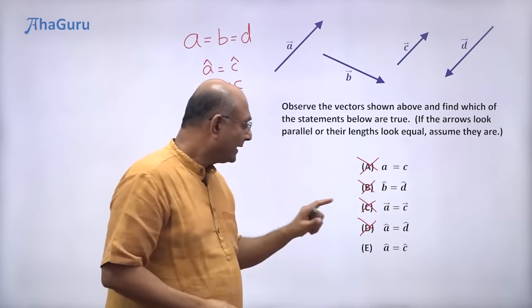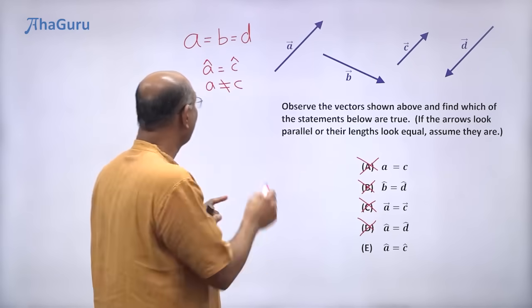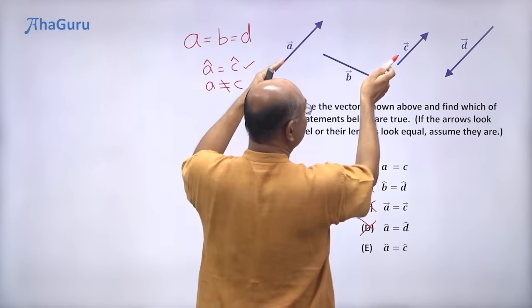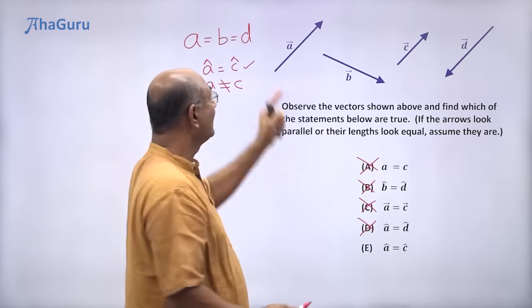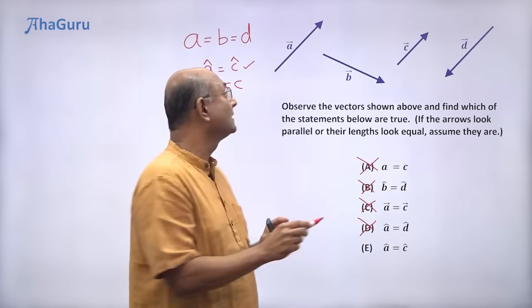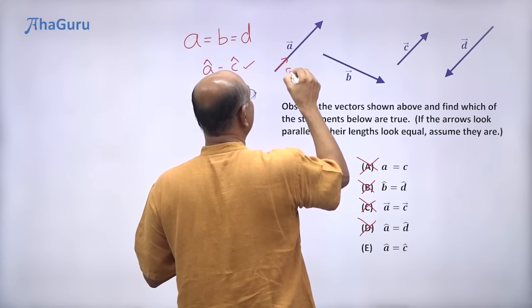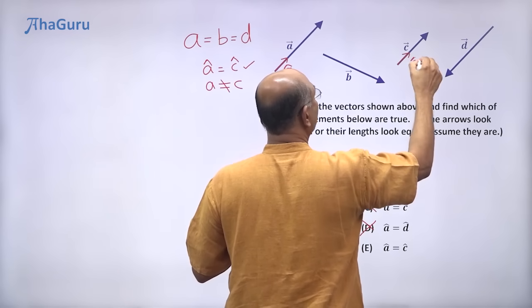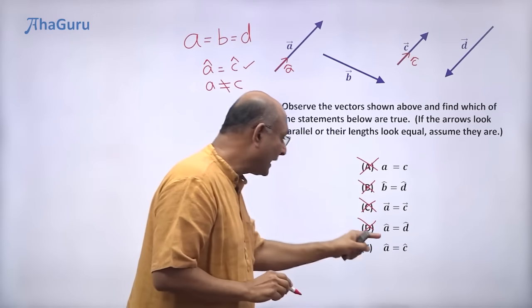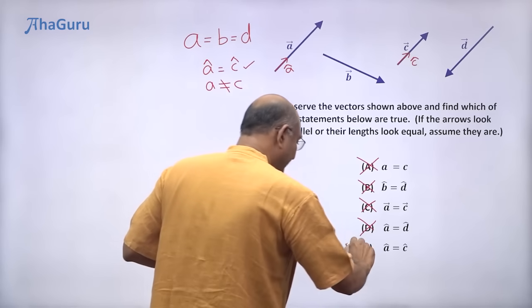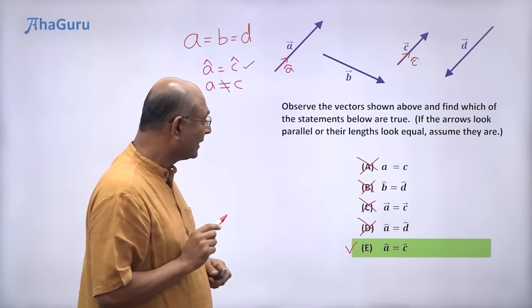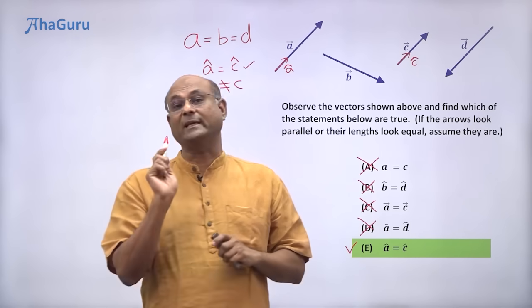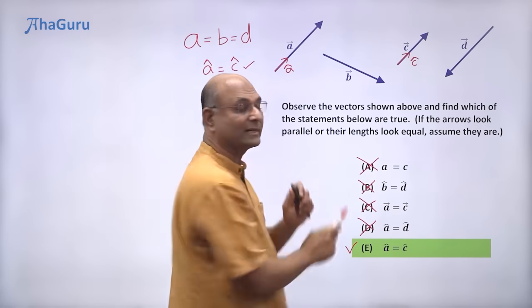What about the last one? A cap is equal to C cap? I have already told you that here, right? So this direction and that direction, they match. They may not have the same size, but their directions match. So this is A cap, this is C cap. So A cap and C cap are equal. So option E is the correct one. Remember, A vector is not equal to C vector, but A cap is equal to C cap. The directions are the same.